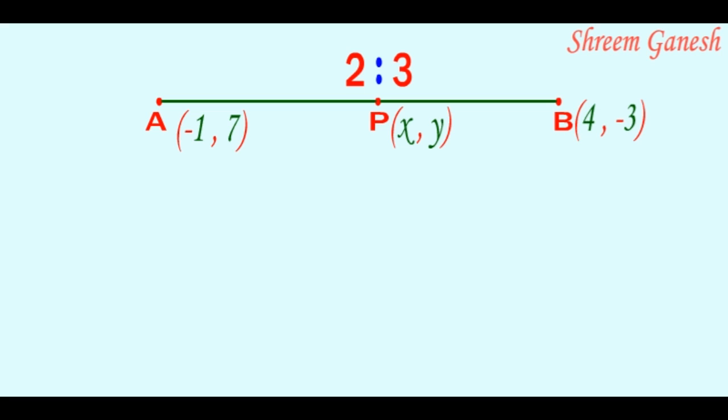According to the section formula, x-coordinate of point P is equal to m₁x₂ + m₂x₁ divided by the sum of m₁ and m₂.